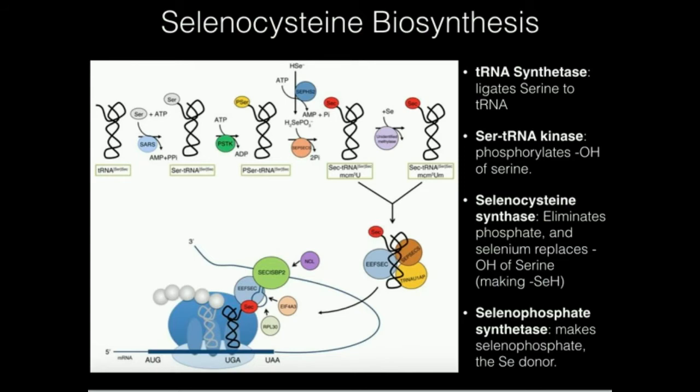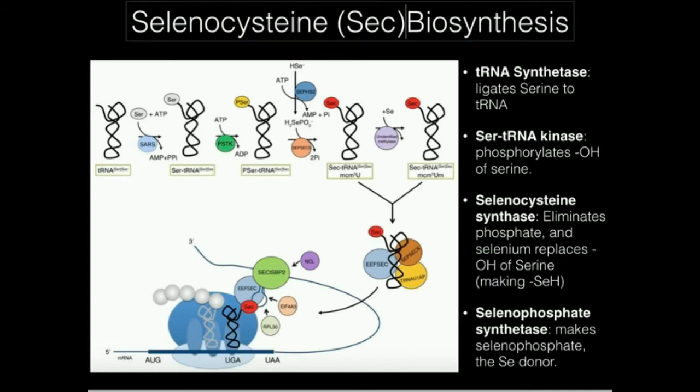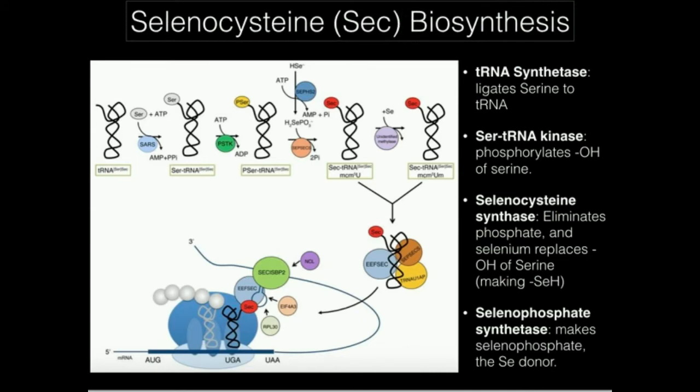This enzyme is called selenocysteine synthase. It's going to take this phosphoserine on the tRNA and perform initially an elimination of phosphate, and then ligate onto it the selenium of the selenophosphate. SEC, by the way, is an abbreviation for selenocysteine — so the three-letter abbreviation for selenocysteine is SEC.